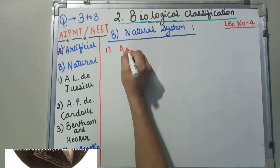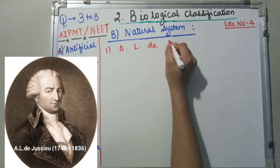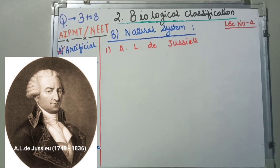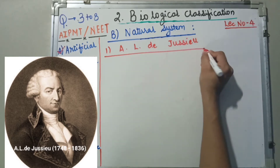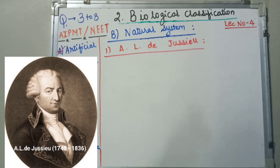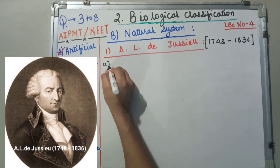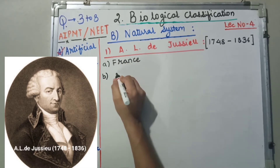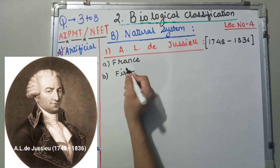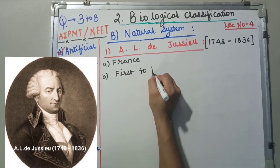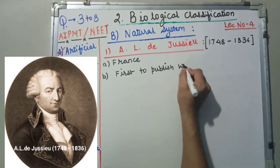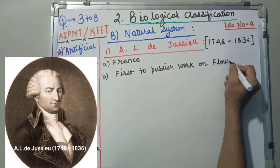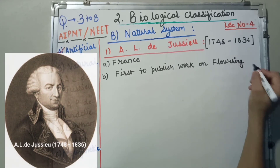Now, let's see the work of ALD Jussieu. He belonged to France, and he was the first one to publish his work on flowering plants.